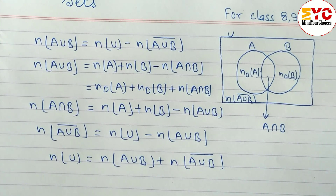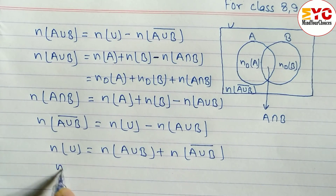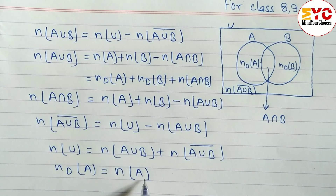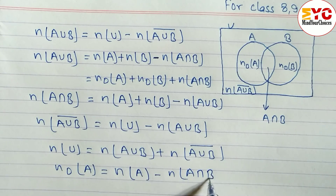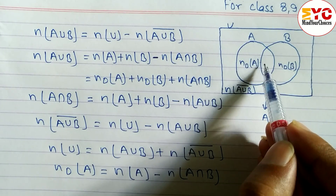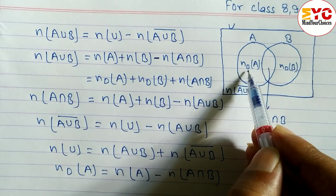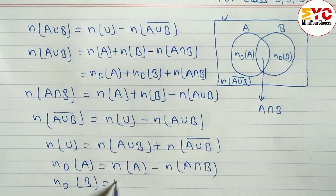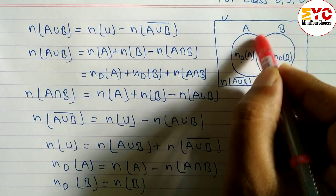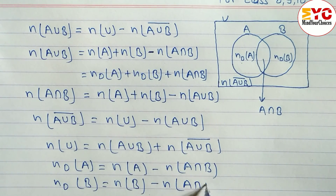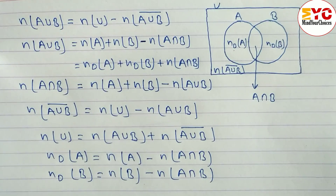The next formula is for n(only A): n(only A) = n(A) minus n(A∩B). From the diagram, to find only A from the full set A, you subtract the intersection middle part. Similarly for n(only B): n(only B) = n(B) minus n(A∩B). From n(B), subtract the middle intersection. These are all the set formulas you need.